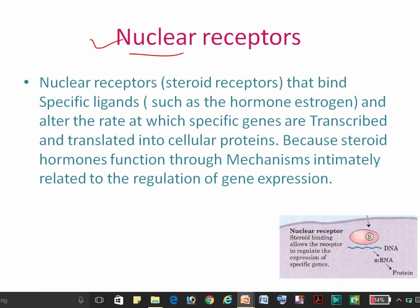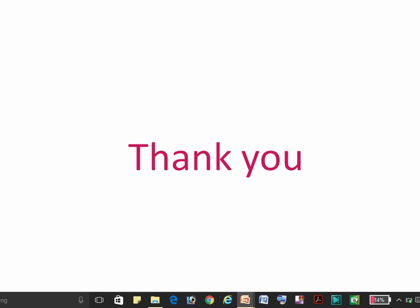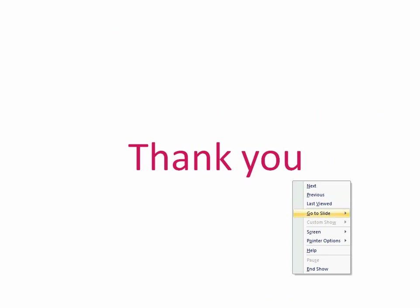The sixth and last one is the nuclear receptor. In this type of receptor, a ligand binds and regulates the expression of genes. The rate of gene transcription and translation is altered by the receptor-ligand complex. I hope this is helpful to you guys.